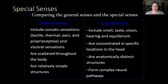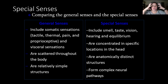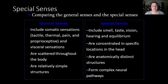This chart compares general and special sensations. General senses include somatic sensations like tactile, thermal, pain, and proprioception, as well as visceral sensations from internal organs. They're scattered throughout the body and relatively simple in structure. Special senses include smell, taste, vision, hearing, and equilibrium. They're all located in the head, use mostly cranial nerves, have anatomically distinct structures — like the retina of the eye versus the cochlea of the ear — and are more complex in their neural pathways.